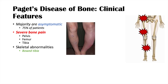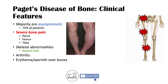Individuals with this condition can also have arthritis or inflammation of their joints. They can have erythema or warmth over the bones that are being remodeled — there's so much osteoclastic and osteoblastic activity that there's hypervascularization of those areas of the bone. That area becomes very warm and can even show some reddening over the surface, which can be a clinical sign.